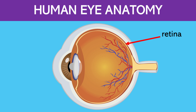Here is the retina. This is a light-sensitive layer at the back of the eye. It contains photoreceptor cells, known as rods and cones, that convert light into electrical signals. Rods are responsible for vision in low light, while cones detect color and are responsible for sharp, central vision.